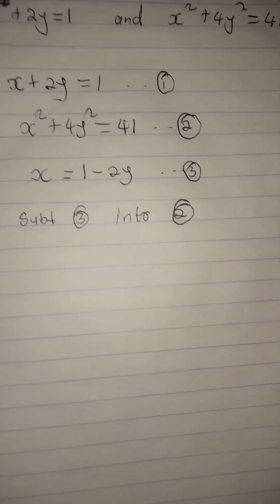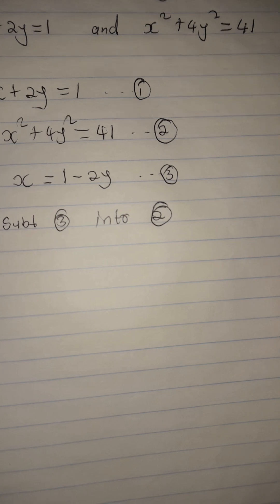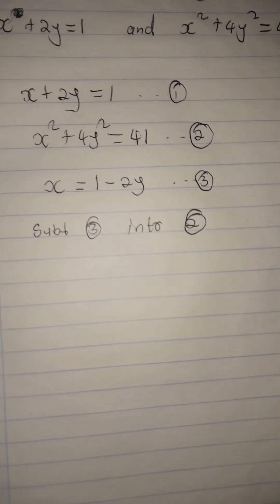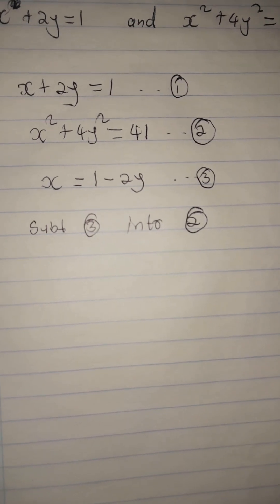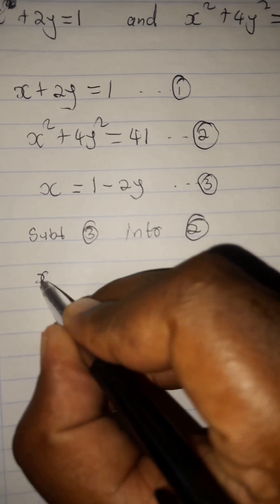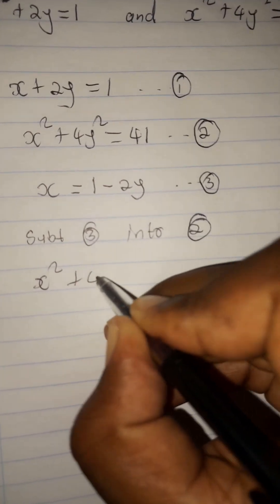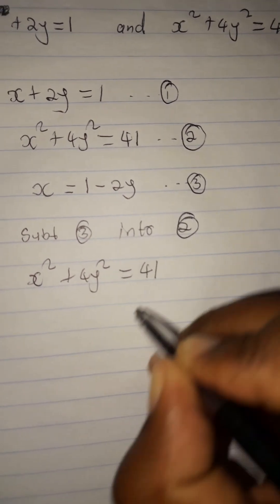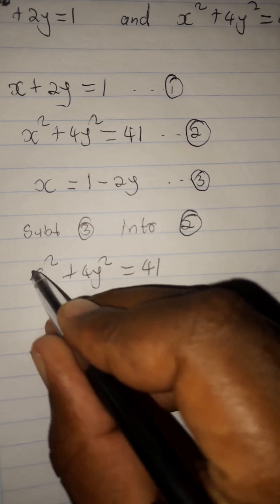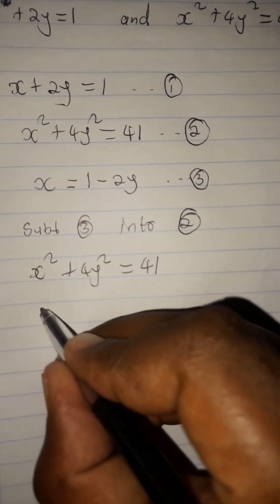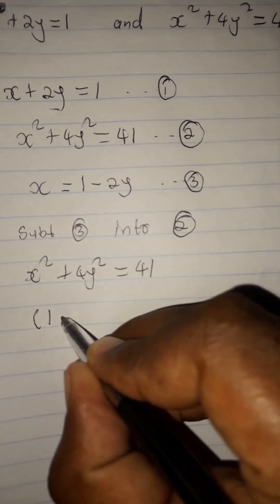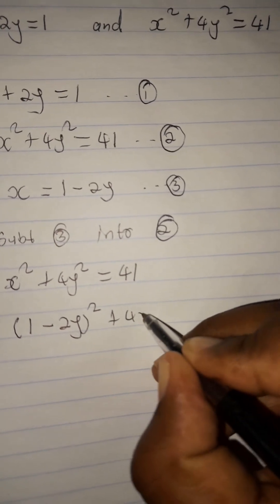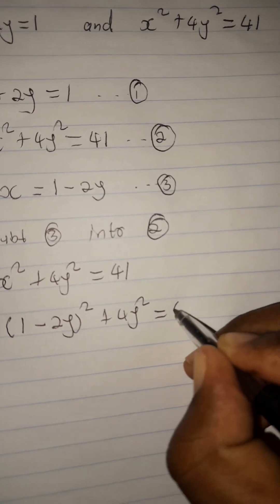Substitute equation 3 into equation 2. Wherever we see x, we are going to replace it with 1 minus 2y. Going to equation 2: x squared plus 4y squared equals 41. Where I see x, I replace it with 1 minus 2y. So this becomes: 1 minus 2y, all squared, plus 4y squared, equated to 41.